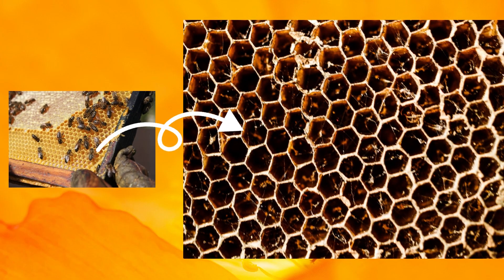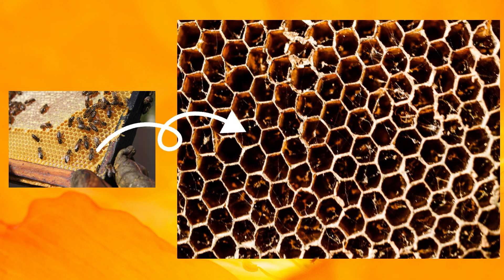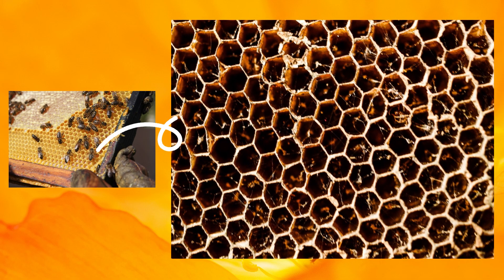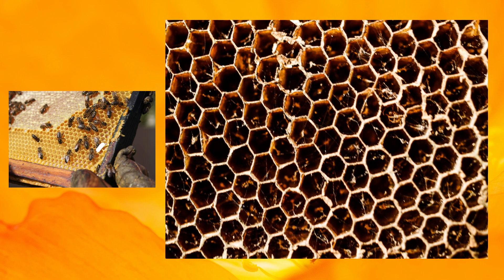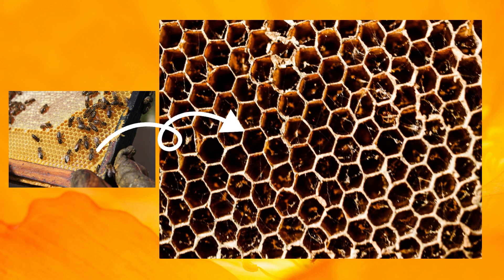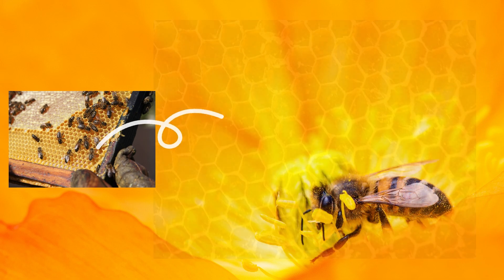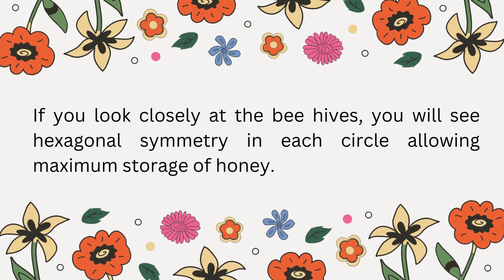If you look closely at beehives, you will see hexagonal symmetry in each cell, allowing maximum storage of honey.